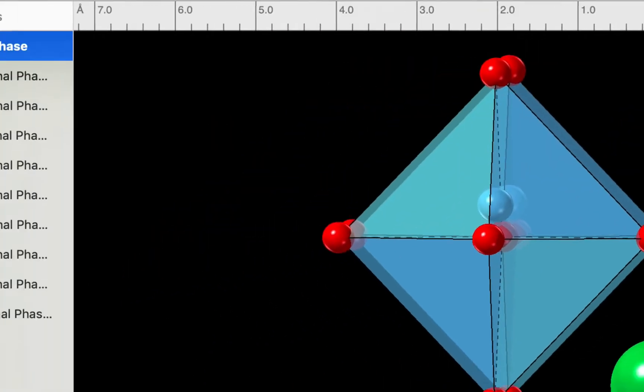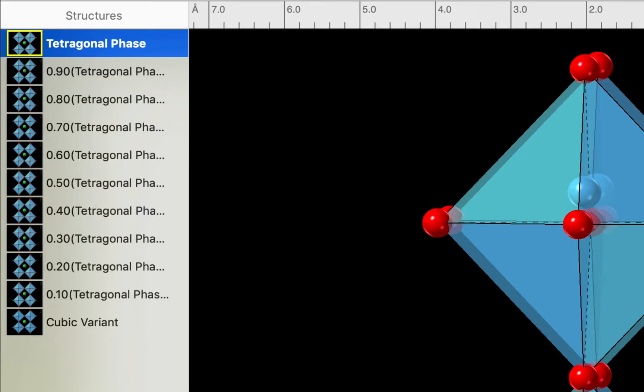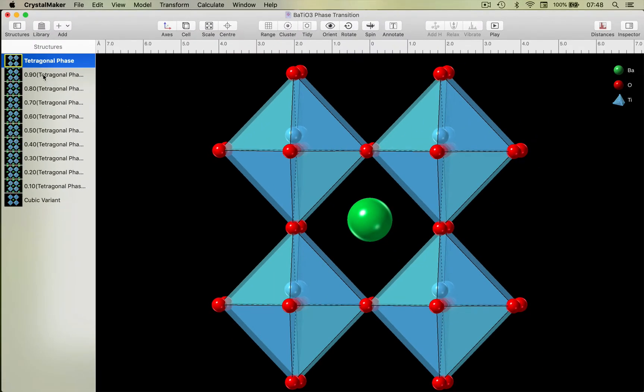And then CrystalMaker produces a sequence of structures in between the two phases.